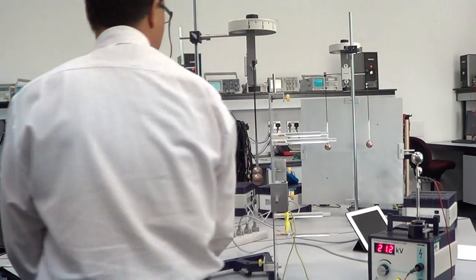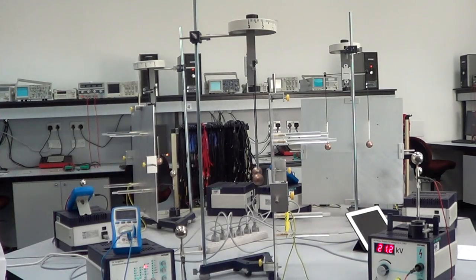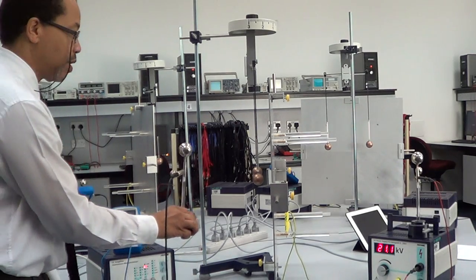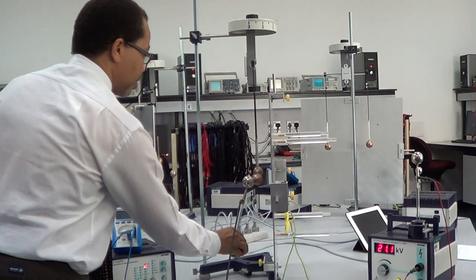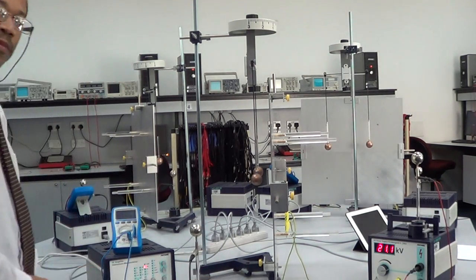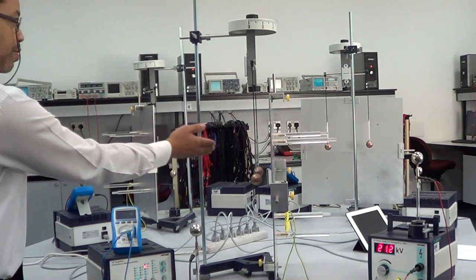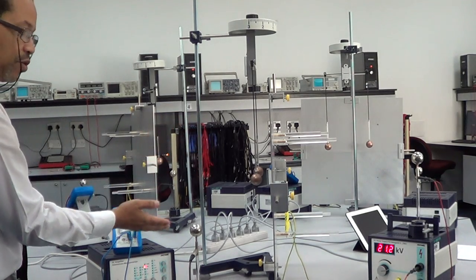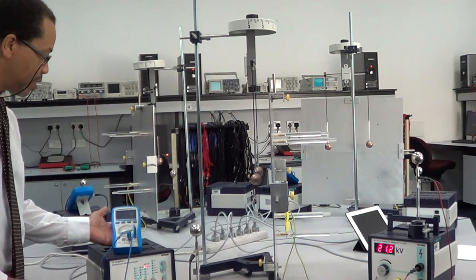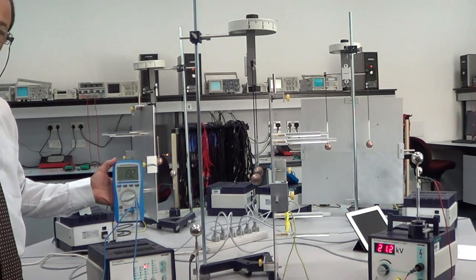Now, to read the charge on the ball, I simply take this conducting sphere and give the ball a gentle touch. The charge from this ball will then be transferred to my measurement conducting sphere. And as you can see, I am reading a voltage on the voltmeter.